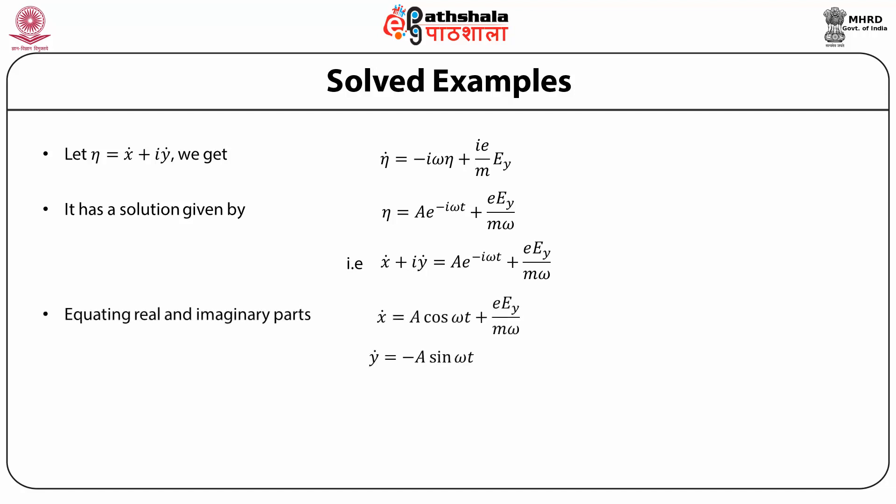Equating the real and imaginary parts, we get x-dot = A cos(omega t) + e·Ey/(m omega) and y-dot = A sin(omega t). Integrating with respect to time and applying the initial conditions (which give integration constant zero), we obtain x = (A/omega) sin(omega t) + e·Ey/(m omega) · t and y = (A/omega) cos(omega t).